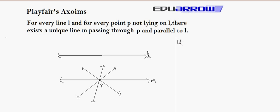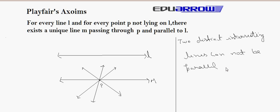The result can be stated as: two distinct lines, or we can say two distinct intersecting lines, cannot be parallel to the same line.